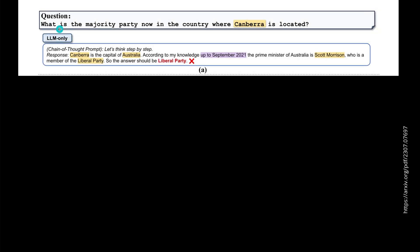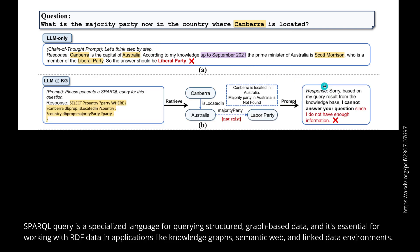Simple example: the question is, 'What is the majority political party now in the country where Canberra is located?' If we have only an LLM — even with chain-of-thought prompting, 'let's think step by step' — the model will fail. If we then have an LLM plus a Knowledge Graph and run a SPARQL query for our RDFs, we retrieve that Canberra is located in Australia, but the majority party in Australia is not found in SPARQL. The prompt responds: 'Based on my query result from the Knowledge Base, I cannot answer your question,' because there was no direct link in the Knowledge Graph available.